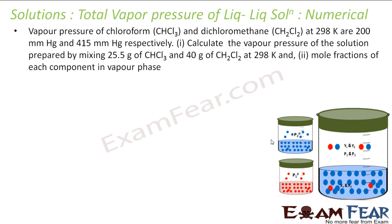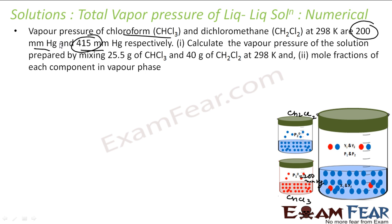Let's take a numerical example. The vapor pressure of chloroform (CHCl3) and dichloromethane (CH2Cl2) at 298 K are 200 mmHg and 415 mmHg respectively — these are the pure-state values. So P1° for chloroform is 200 mmHg, and P2° for dichloromethane is 415 mmHg.